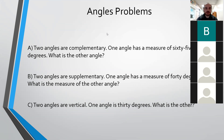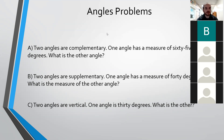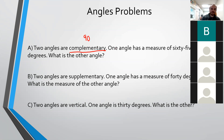We've got three quick problems here — these are word problems, but they shouldn't be too bad. Problem A says that two angles are complementary and one angle has a measure of 65 degrees. What is the other angle? Complementary angles always add up to 90. I know one of them is 65, so I subtract 65 and get my second angle, which is 25 degrees.